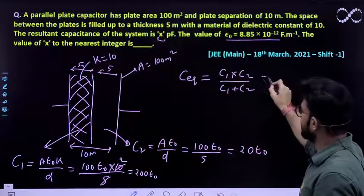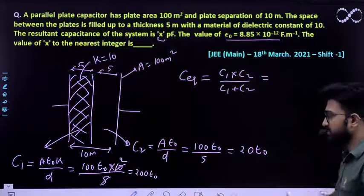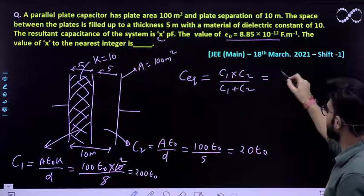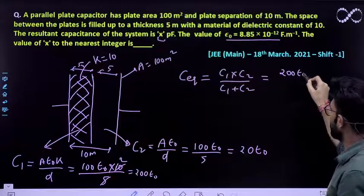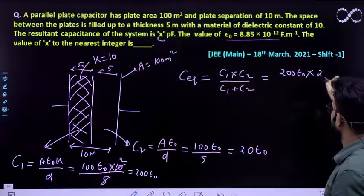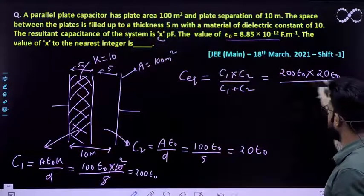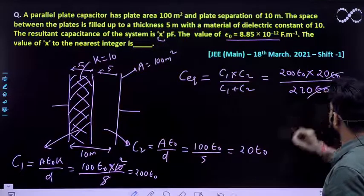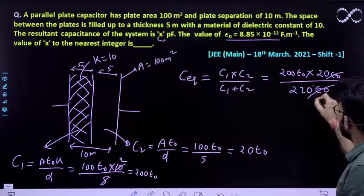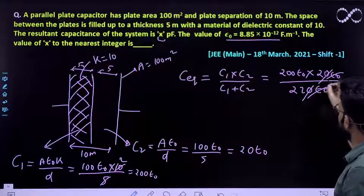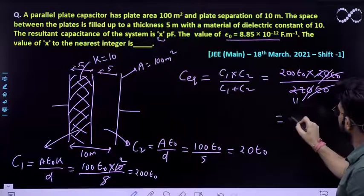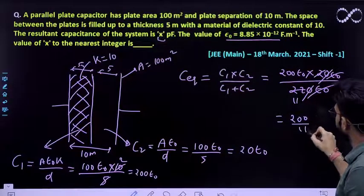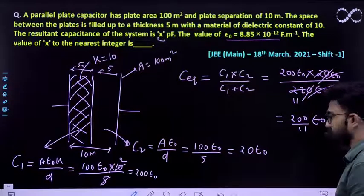Ab jaldi se iski value put karenge isme, c1 c2 divided by c1 plus c2. So c1 ki value kitni hai? 200 epsilon naught, c2, 20 epsilon naught divided by, dono ka sum karenge toh kitna hoga? 220 epsilon naught. Epsilon naught cancel. Ye this is cancel, so 0 so 0, so 2 11's, 200 by 11 epsilon naught ye value.